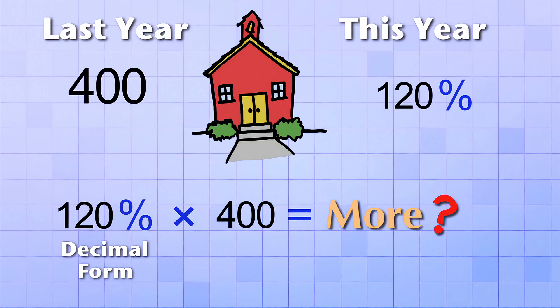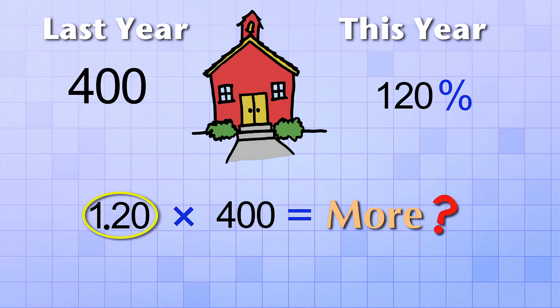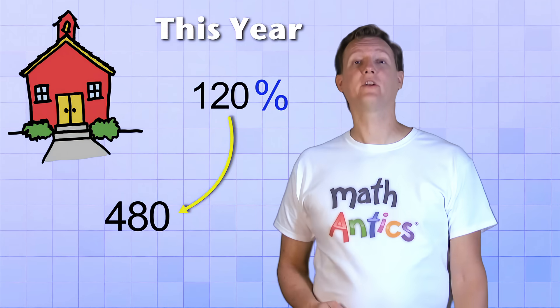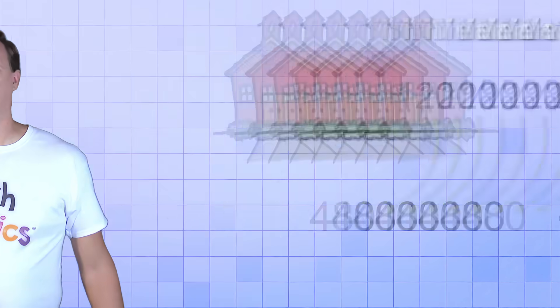To get the decimal form of 120%, we move the decimal point over two places to the left, and we get 1.20. So we multiply 1.20 times 400, which gives us 480. So this year there's 480 students at school. Alright then, that's how you find the percent of a number. And it's a really useful math skill that has a lot of real-life applications, so it's important to learn how to do it right.